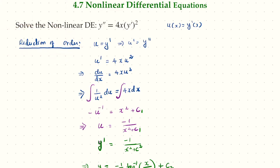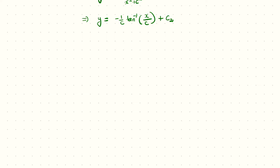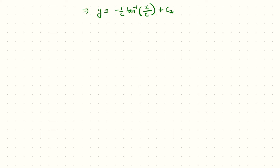This reduction of order method won't work every single time — it only works when one of the functions or derivatives is missing. Here we had two successive derivatives with no standalone y. The second type of method applies when the independent variable is missing: if the differential equation has no explicit expression of x in it, we can solve it in a nicer way.